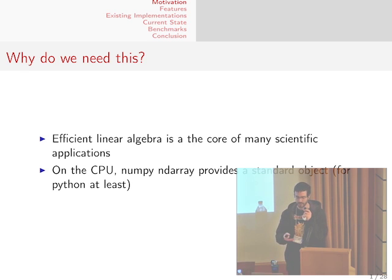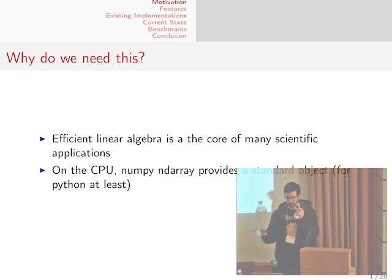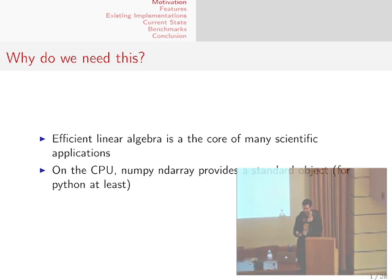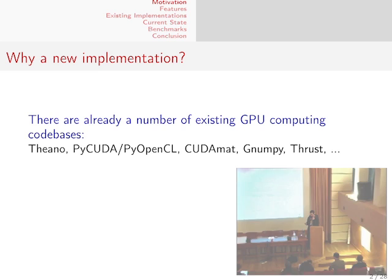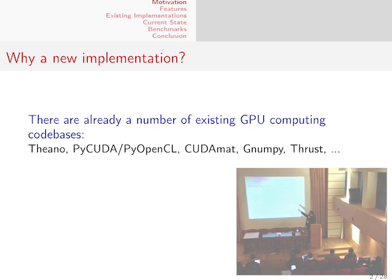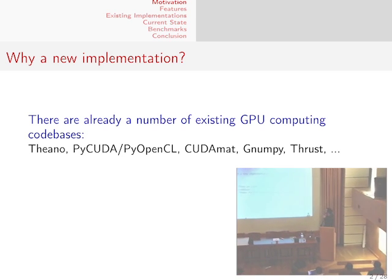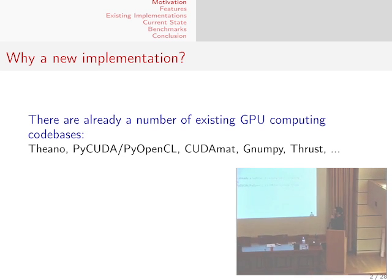On the CPU, in Python at least, you have NumPy that provides the NDArray object, which is a standard matrix tensor multidimensional thing, allowing sharing of code between projects that use this as a basis for their data. There are already on the GPU a number of implementations that work with some kind of tensor object resembling the NDArray in NumPy.